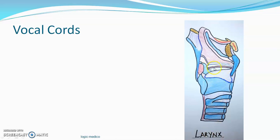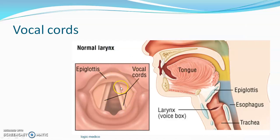Vocal cords are shelf-like projections within our larynx, or the voice box. There are two shelf-like projections on either side of the laryngeal walls. These are the upper part of the crico-vocal membrane. From the cricoid cartilage, a membrane projects upward — there is connective tissue thickening — and that upper margin of the crico-vocal membrane forms the vocal cords.